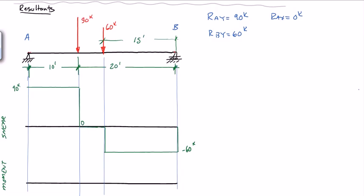And our change in moment between point A and the first load is equal to this area. So A is equal to 90 kips times 10 feet, and that's equal to 900 kip feet. So from here to here, we're going to go up 900.